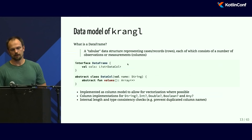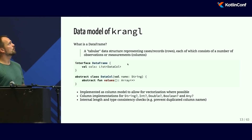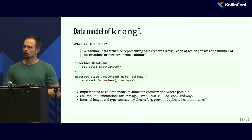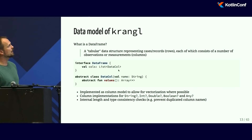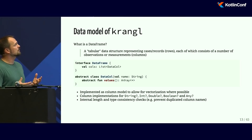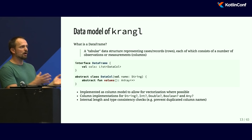I set up a project called Krangl, which is a shortcut for Kotlin DSL for data wrangling. It's a library that implements a grammar for data manipulation using a modern functional-style API. The data model is very naive: a data frame is simply a list of columns, and each column has a name and an array of values. We don't do any optimization or column compression — we just try to stay simple and implement a fun API around it.